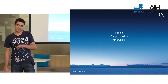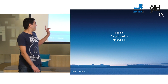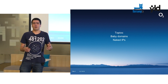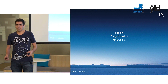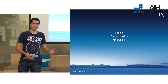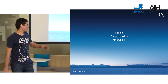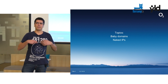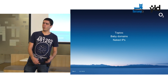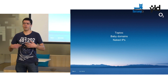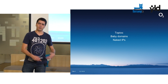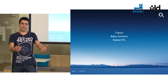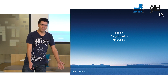Now what does that mean exactly? Baby domains are domains that got registered recently, so three to six months ago. Naked IPs are — let's say you're going to a website and instead of using the domain for that website, you use the IP. So we call that a naked IP.